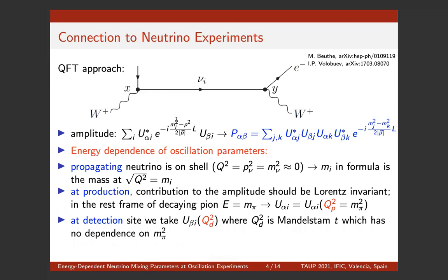To clarify the picture, let us look at this Feynman diagram representing neutrino production, neutrino propagation, and neutrino detection — this is the basis of the QFT approach for neutrino oscillation probabilities. What enters such a probability formula are the mass-squared differences and the PMNS matrix elements. The propagating neutrino is on-shell because it needs to travel a macroscopic distance, meaning these masses should be evaluated at a momentum transfer of order the neutrino mass squared — a very small scale where we don't expect any RG effects.